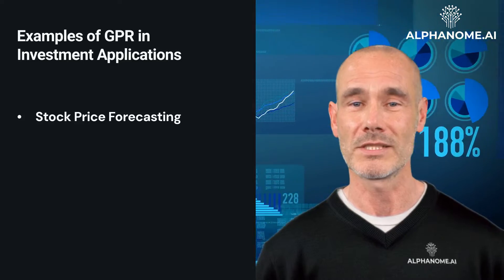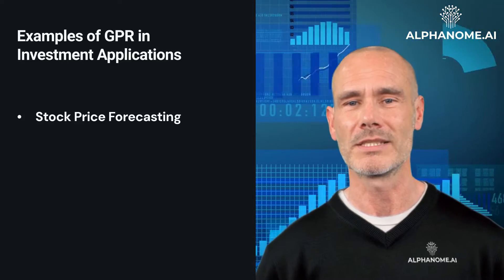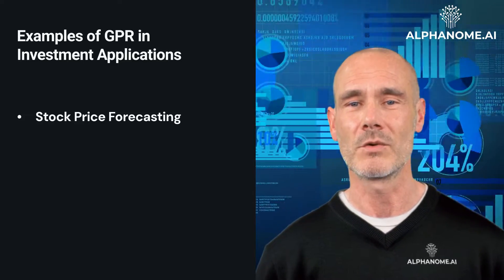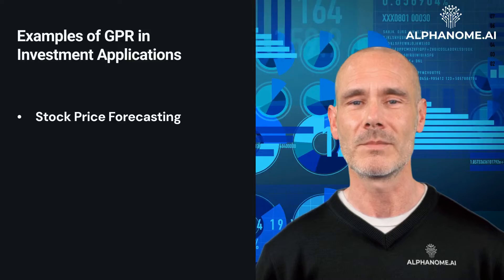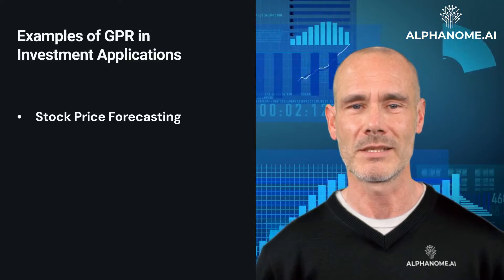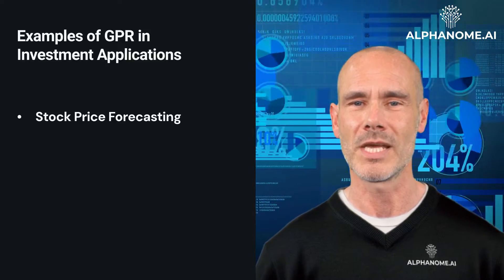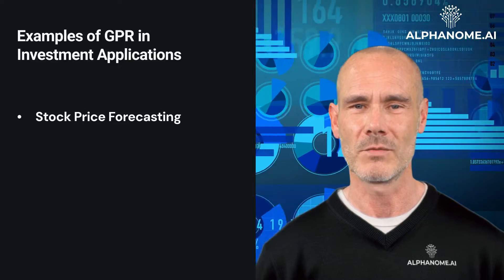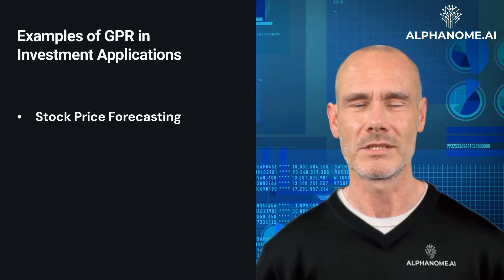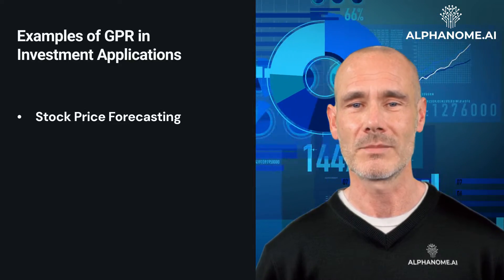For example, suppose an investor wants to forecast the stock price of a technology company for the next quarter. GPR can be trained on historical stock prices, earnings reports, industry trends, and other relevant factors to generate predictions and associated uncertainty estimates.